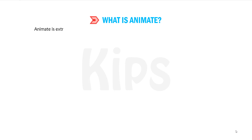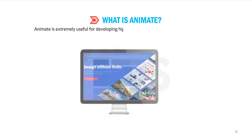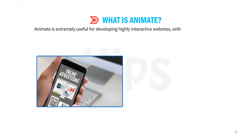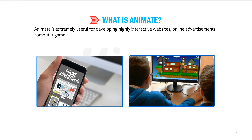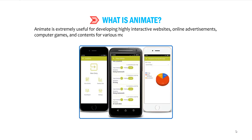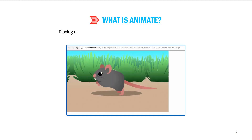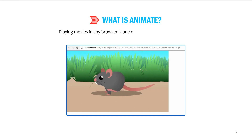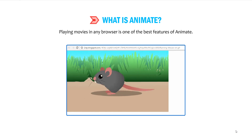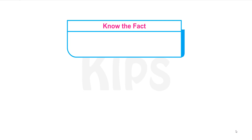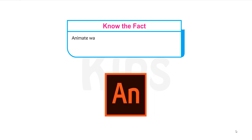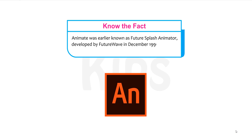Animate is extremely useful for developing highly interactive websites, online advertisements, computer games and contents for various mobile devices. Playing movies in any browser is one of the best features of Animate. Animate was earlier known as Future Splash Animator, developed by Future Wave in December 1996. Later on, it was acquired by Adobe Systems in 2005.